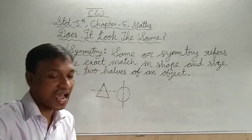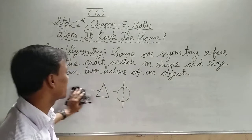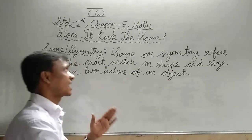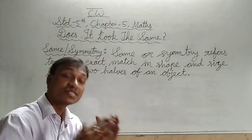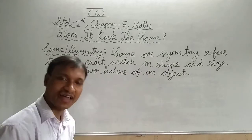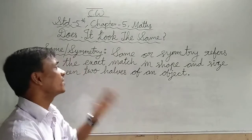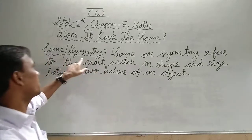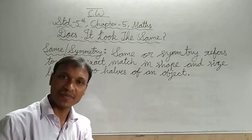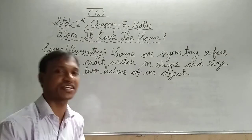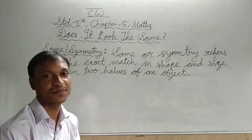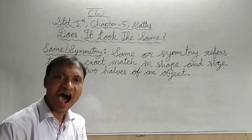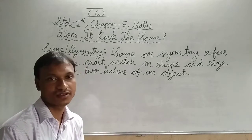So students, let's start. We have the concept of 'same' — same means the sides are equal. This is the same. Symmetry — this is the same. So we can say that 'same' means symmetry. Both words have the same meaning. Same or symmetry — both refer to the same concept.